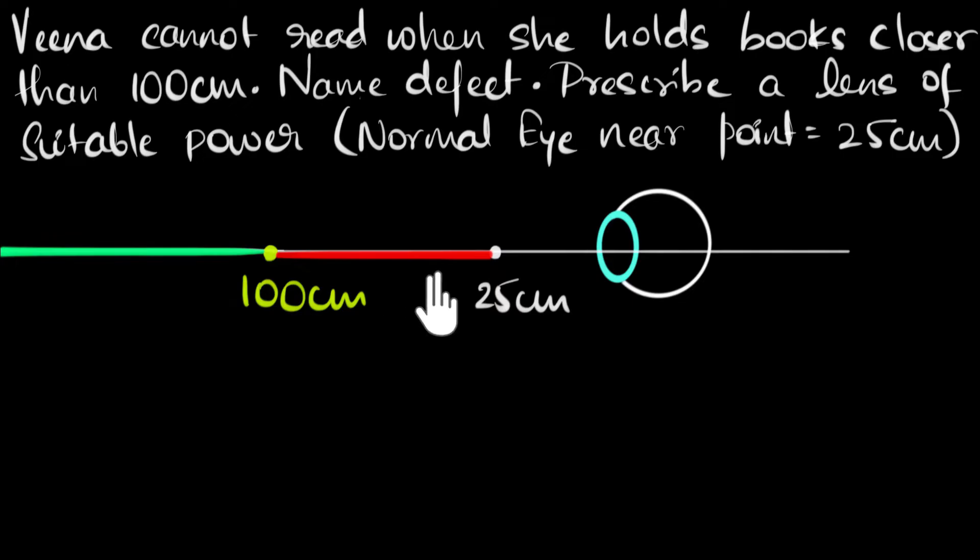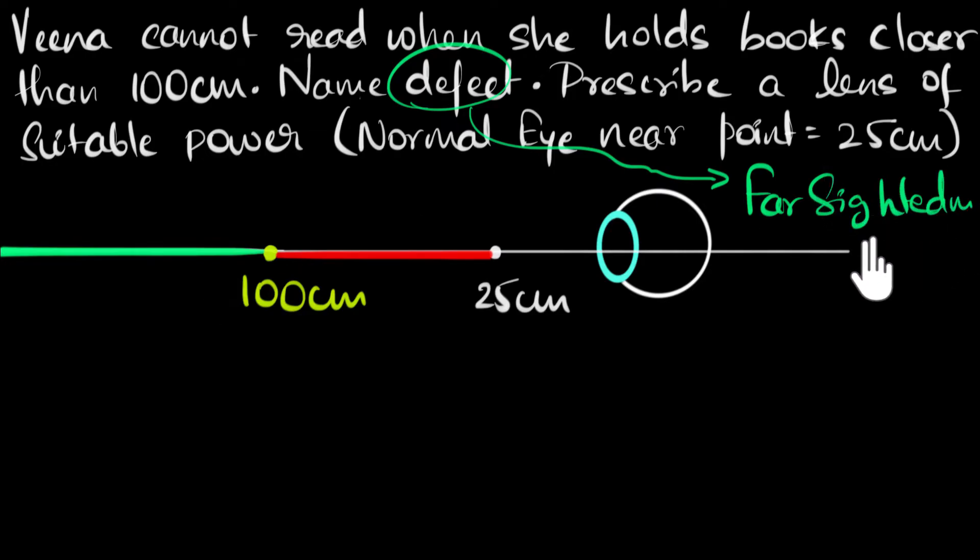Since she can see things which are far away, but she cannot see things which are close to her, she is far sighted. So the defect is farsightedness, or the biological term is hypermetropia. I will not write that, it's not needed. So we got that, that's the defect.